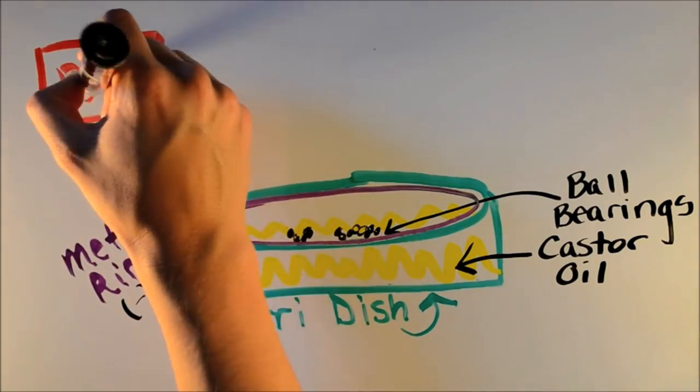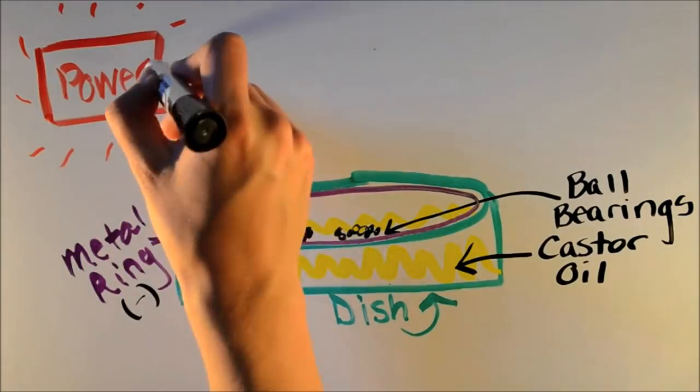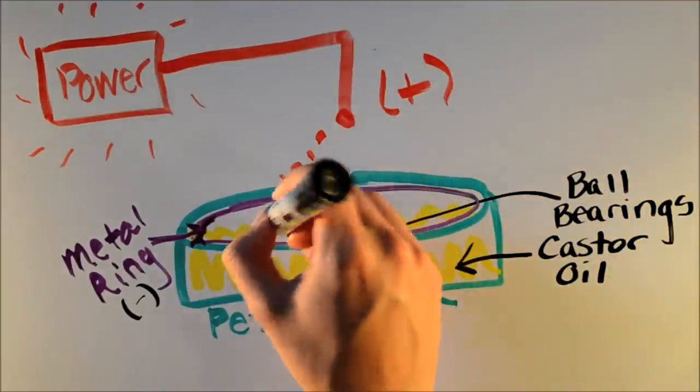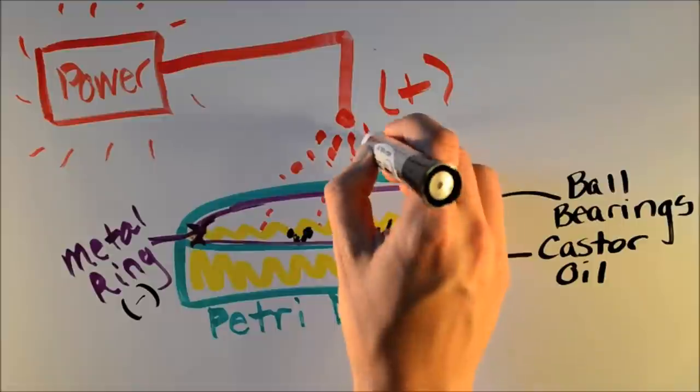Next, we attach a power supply and hang a wire over the top of the petri dish. When we apply a large voltage, electrons get sprayed down to the ball bearings in the dish.